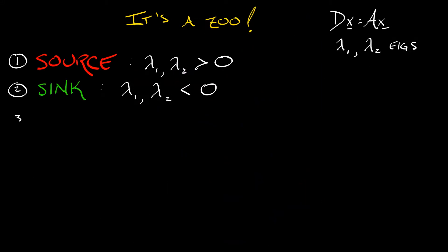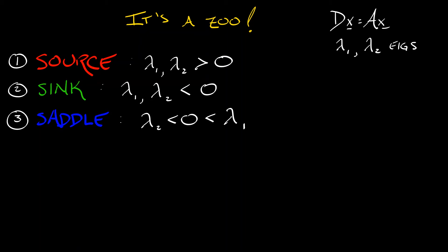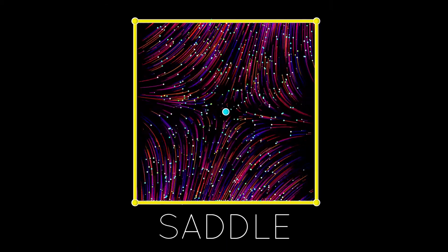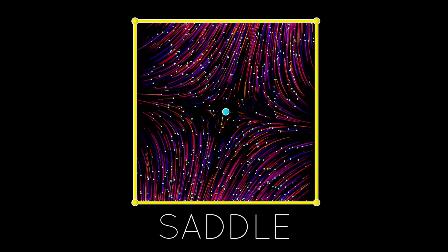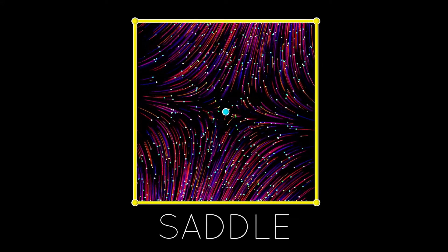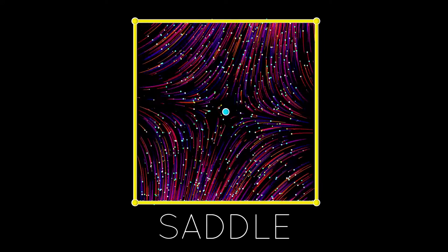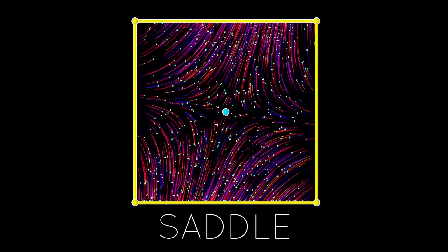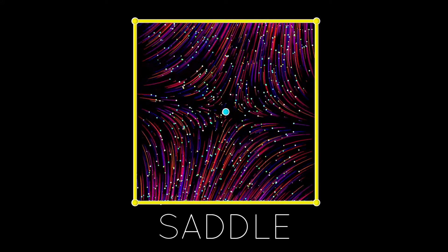It starts getting interesting when you mix stable and unstable. If we have one stable, one unstable eigenvalue, that is called a saddle. That has some really interesting behavior where you've got things decaying exponentially along one eigendirection and then exponentially growing along another eigendirection. In between, everything sort of gets sucked in and then ejected out one way or the other.